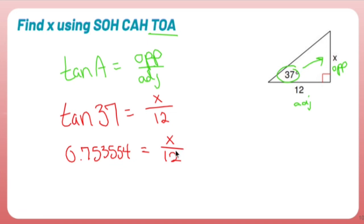Is X all by itself? No, it's not. 12 is being divided from it, but this is just an algebra one problem. Multiply both sides by 12.